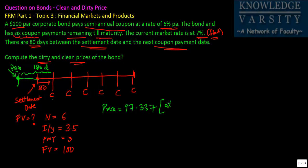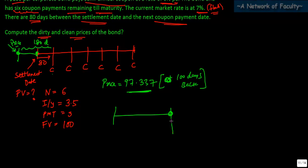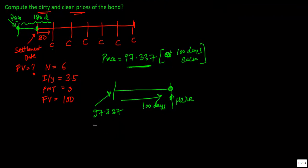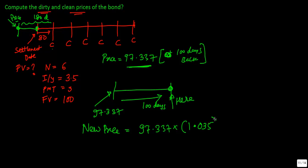Please note that this price of 97.337 is at a point 100 days back from the settlement date. What we need to find is the settlement price. So what we have to do is compound this value forward. We are at this point and the price 97.337 is given 100 days back. The new price will be 97.337 multiplied by 1 plus R, where R is I/Y = 3.5%, so 1.035.